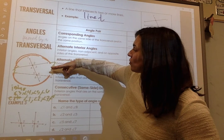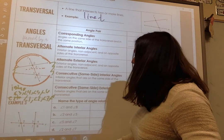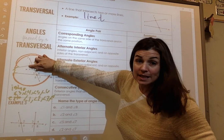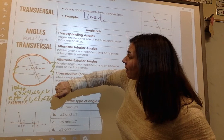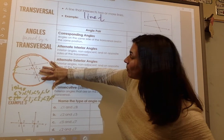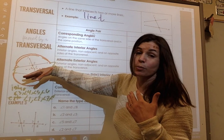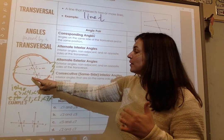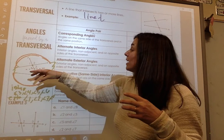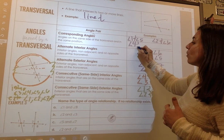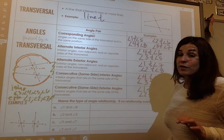Corresponding angles: imagine I took scissors and cut straight through this line. If I picked up angles 1, 2, 4, and 3 and set them right on top of 5, 6, 8, and 7 — angle 1 would be on top of 5, angle 2 on top of 6, angle 4 on top of 8, and angle 3 on top of 7. Corresponding angles are just those in matching positions. Angle 1 and 5 are both top-left; angle 2 and 6 are top-right; angle 4 and 8 are bottom-left; angle 3 and 7 are bottom-right. So corresponding angle pairs are: 1 and 5, 2 and 6, 4 and 8, and 3 and 7.